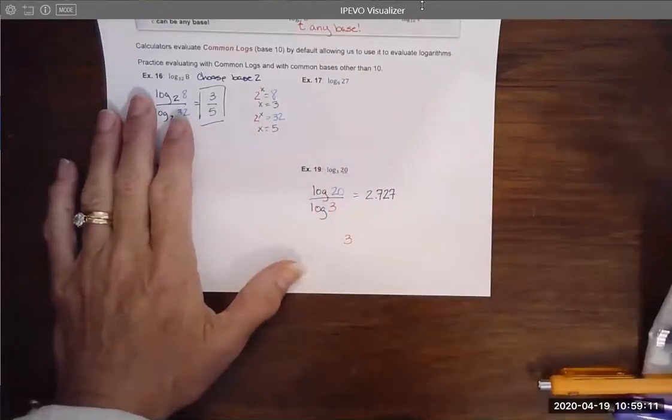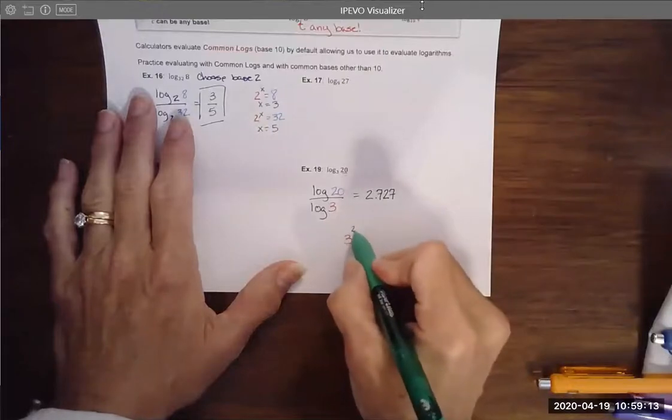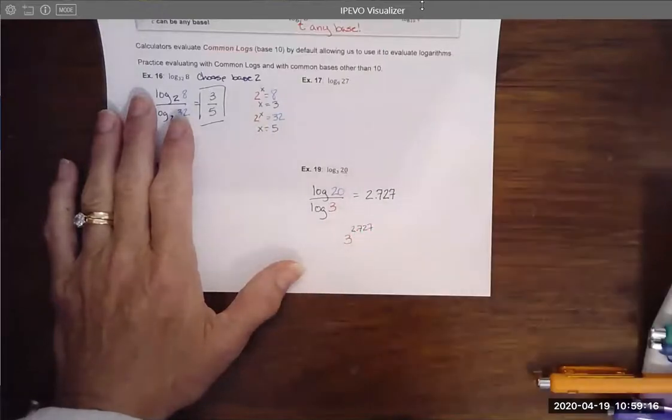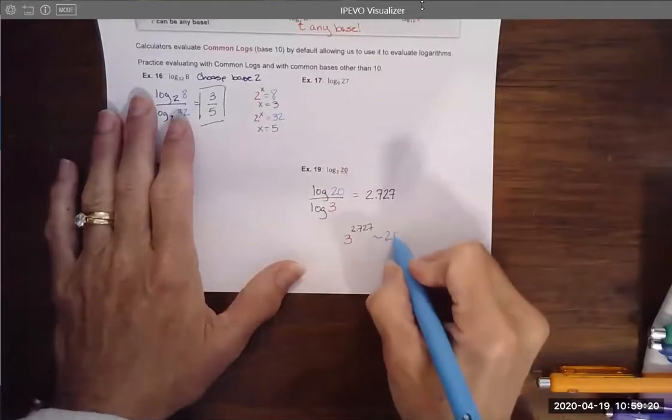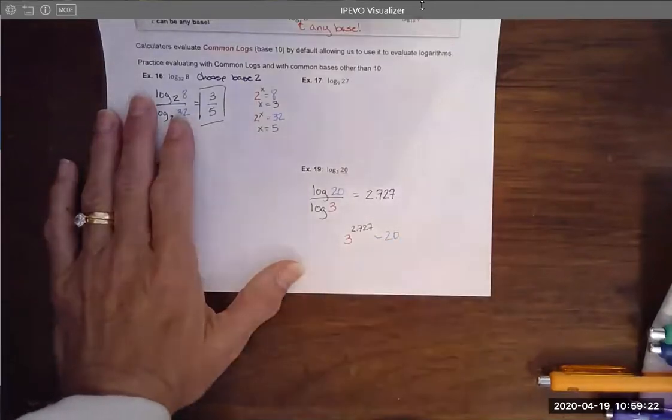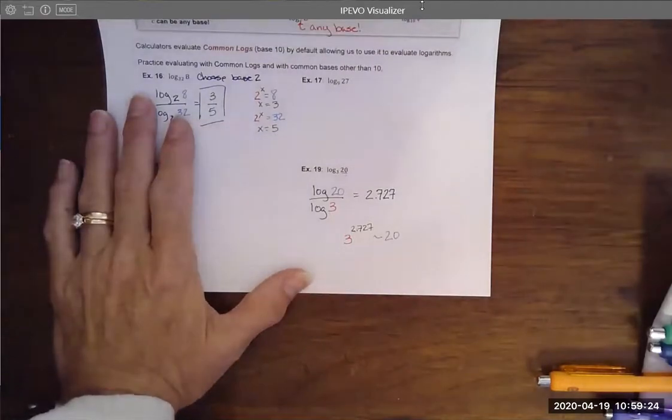as an exponential statement. And I'm saying that 3 to about the 2.727 is going to be roughly about 20. And that's how using a common log can help us evaluate logarithmic functions.